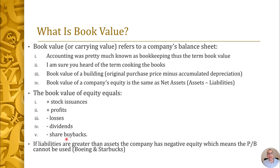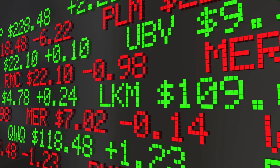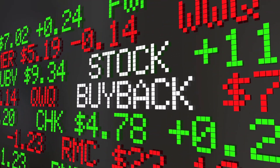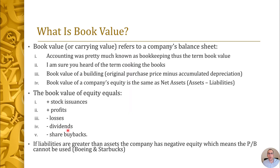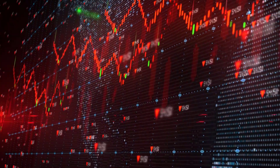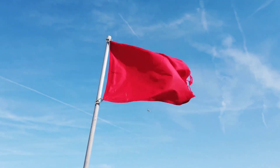If you look on the balance sheet and liabilities are greater than assets, the company has negative book value and you cannot calculate the price-to-book. Some people assume negative equity means the company can go bankrupt any day — that could be true — but companies like Boeing and Starbucks have negative equity because they buy back so much stock. If negative equity is caused by buybacks, that's more of a neutral thing. But if it's because the company has losses year after year, that's a big red flag.